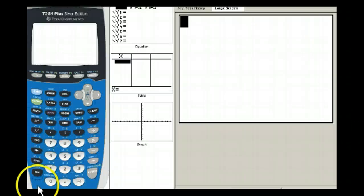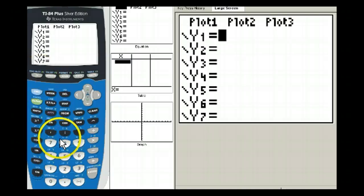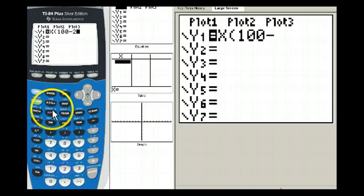So let's put that function into our calculator. y equals x times 100 minus 2x, and that should give us a good representation of the area.